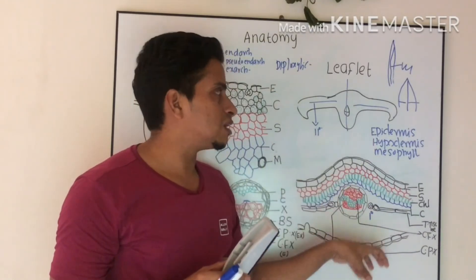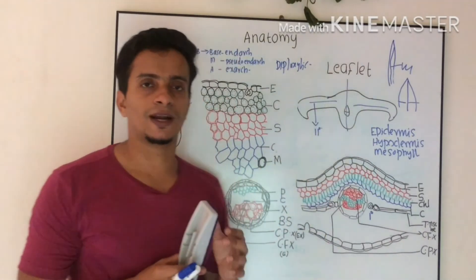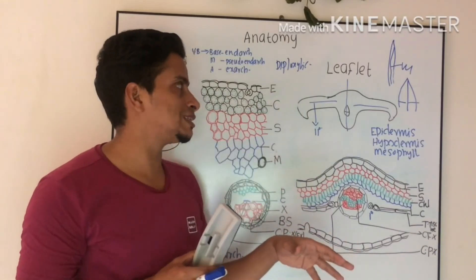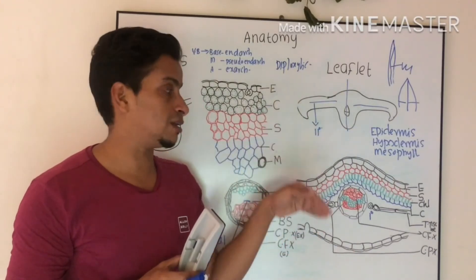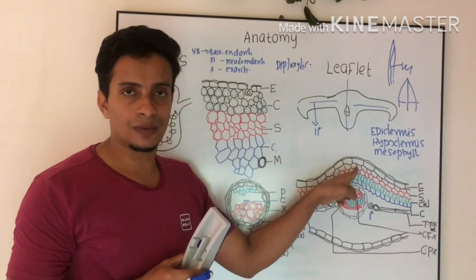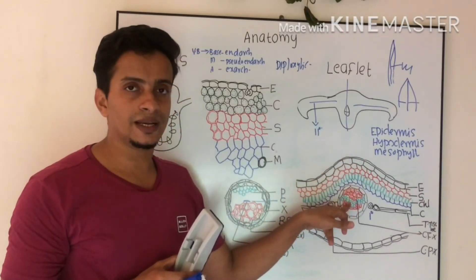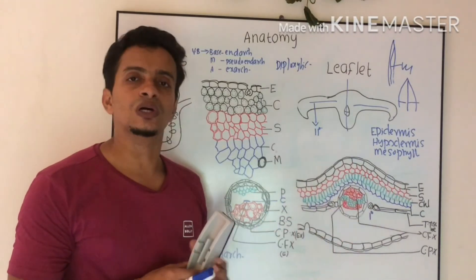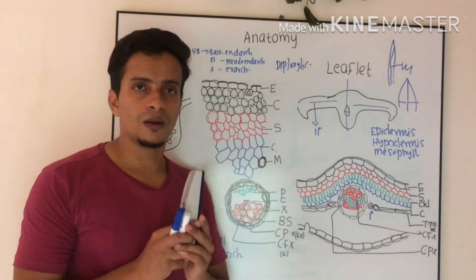So this is how we can see the leaflet anatomy: sclerenchymatous hypodermis followed by chlorenchyma, diploxylic condition, and also transfusion tissue. This is the internal anatomy of rachis and leaflet.